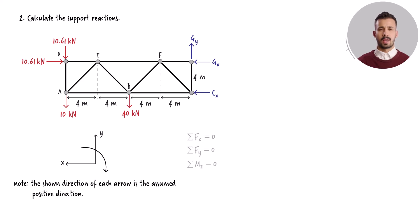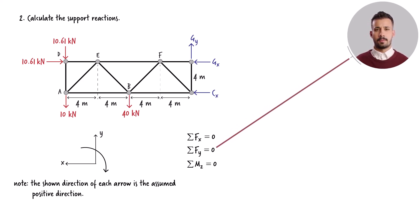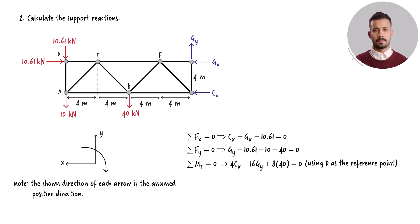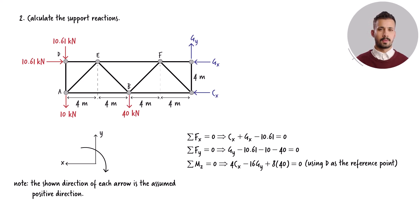We need to write three equations: the forces acting in the X direction, the forces acting in the Y direction, and the moments around the Z axis all have to sum up to zero. For the moment equation, I use D as the reference point. I could have used any other reference point for writing the moment equation.